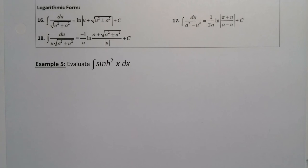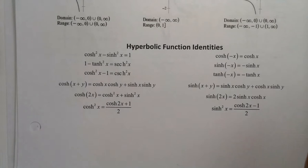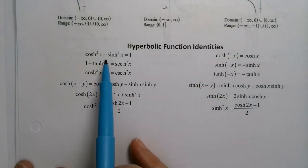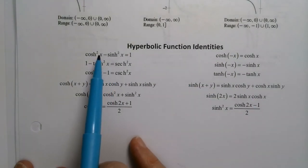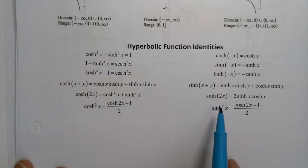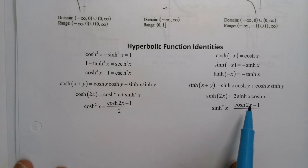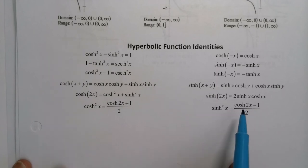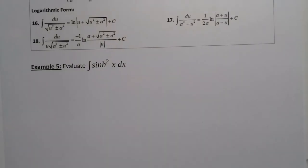I do remember there was an identity that involves sinh², so let me go back a page or two to the identities. sinh² is involved in a couple of them, but if I use one of them I'd get cosh², and I don't have an integral for that. But I notice that sinh²(x) equals (cosh(2x) − 1) / 2.